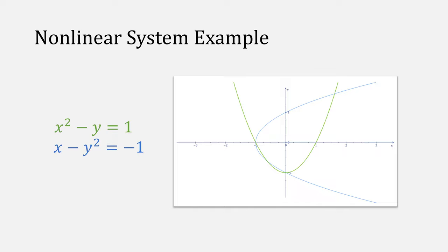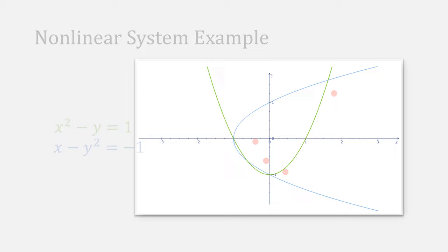We'll use again the example from my earlier videos, using x squared minus y equal to 1, and x minus y squared equal to negative 1, which has these four solutions.